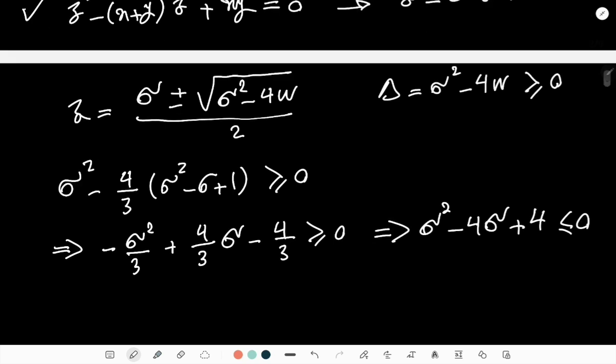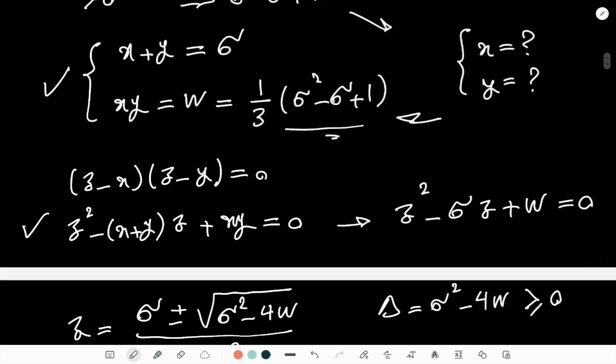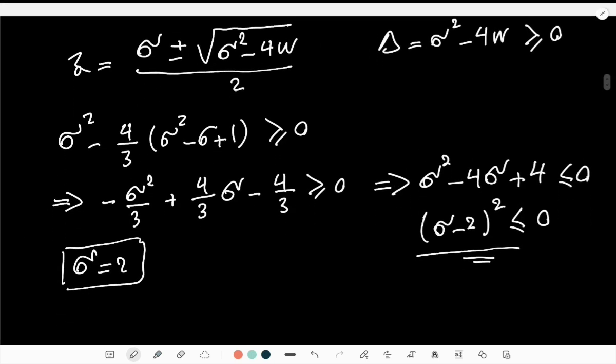And what is that? That is basically (σ - 2)² ≤ 0. So when does this inequality hold? It holds only if σ = 2, otherwise it will not. So only if σ = 2 I have two answers or two repetitive answers or just an answer to that quadratic equation and I can find x and y. So x and y from this system of equation can only be found if σ = 2.